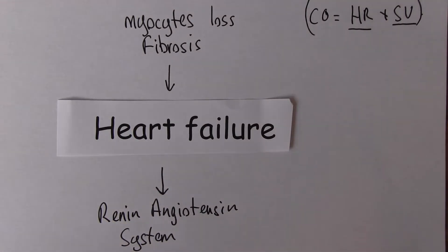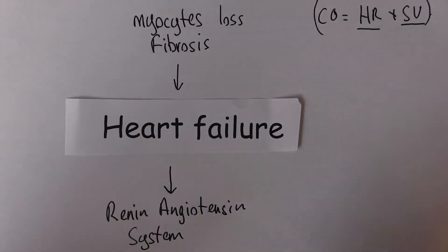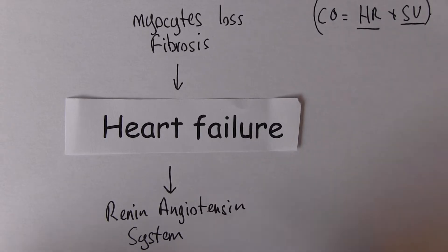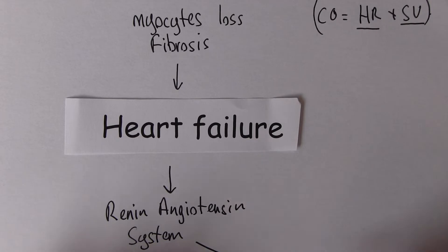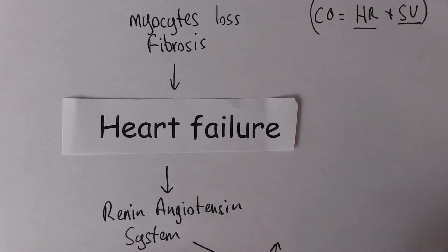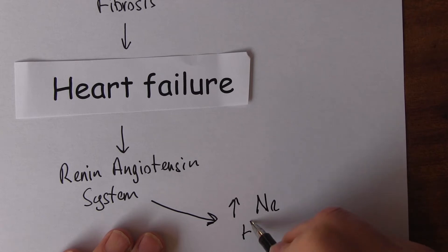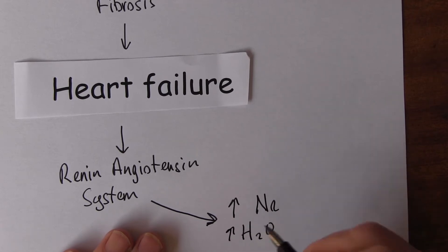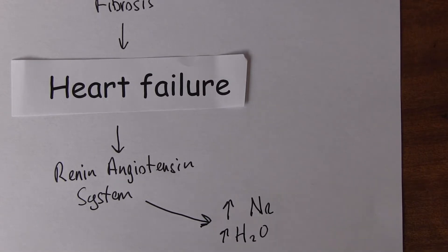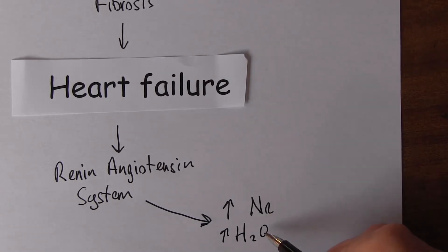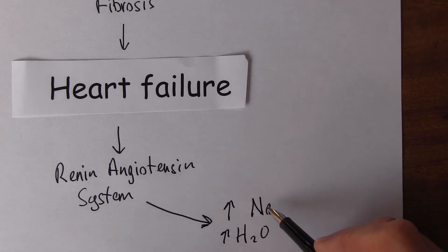As we say in English, there's no point flogging a dead horse — that's essentially what this system is trying to do. The renin-angiotensin system is going to increase sodium and water reabsorption from the kidneys, so there's going to be more sodium and water in the body.